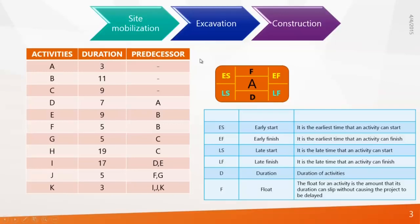Before the launch of every project management software, planners used to draw large network diagrams describing Early Start (ES), Late Start (LS), Early Finish (EF), and Late Finish (LF) of every single activity. A description of ES, EF, LS, and LF is given in this table, and this is how they represent an activity.